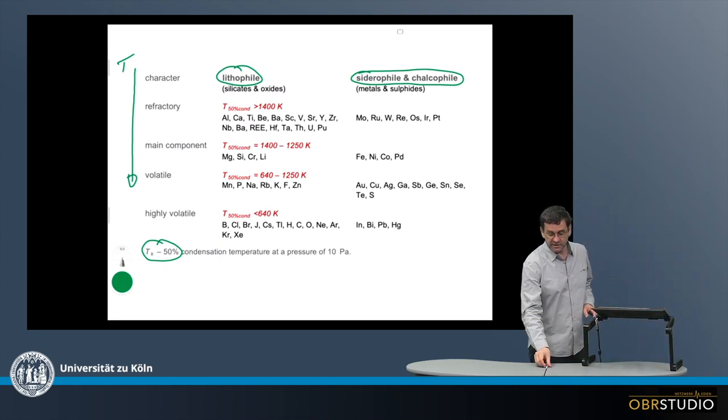This means that at this temperature, 50% of an element has been condensed. So, for example, at something like 1500 Kelvin, 50% of aluminum condensed.